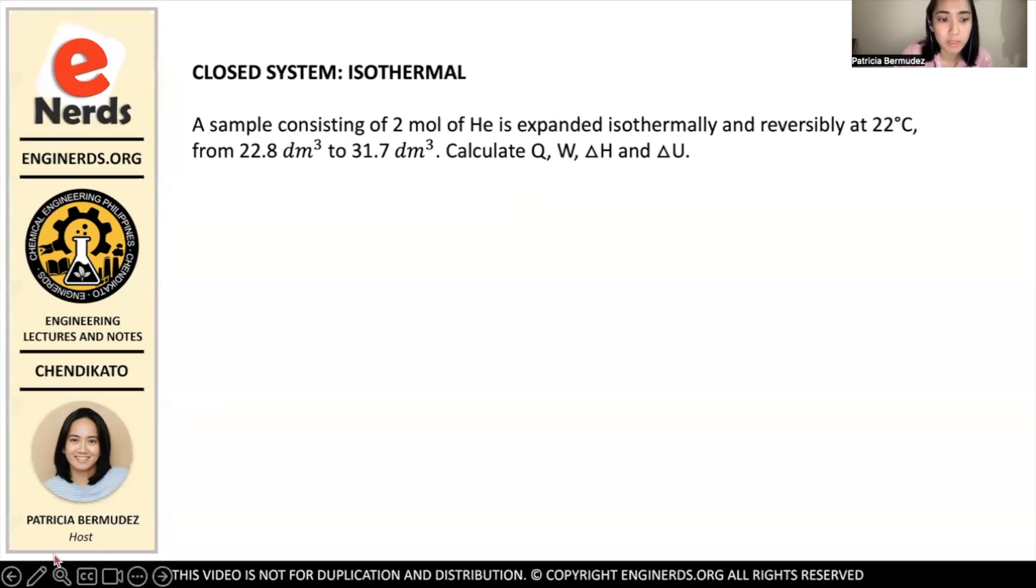So for today's video, we will be discussing a closed system type of problem, and it is isothermal. The question states that a sample consisting of 2 mol of helium is expanded isothermally and reversibly at 22 degrees Celsius from 22.8 cubic decimeter to 31.7 cubic decimeter. Calculate q, w, delta h, and delta u.